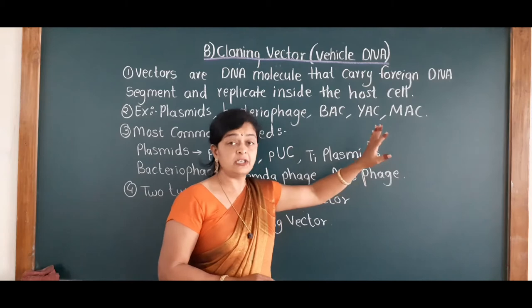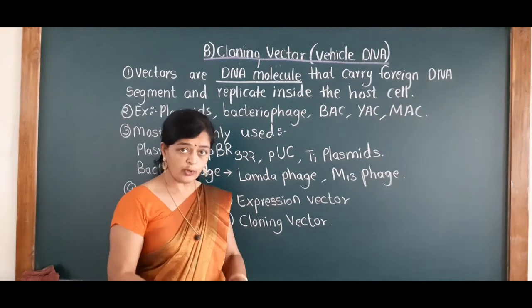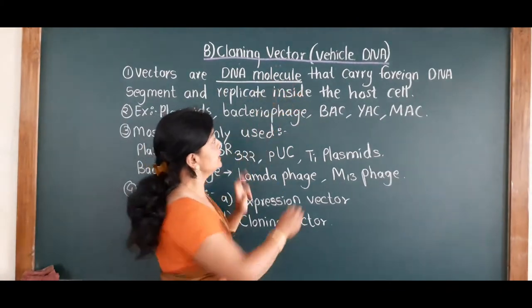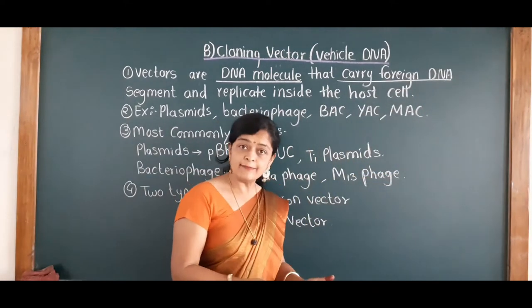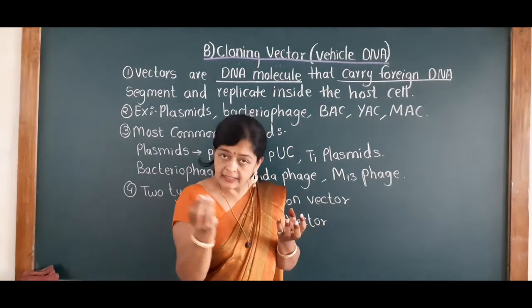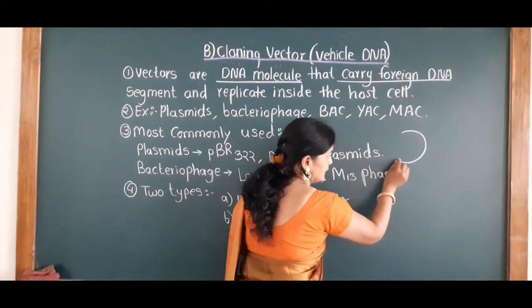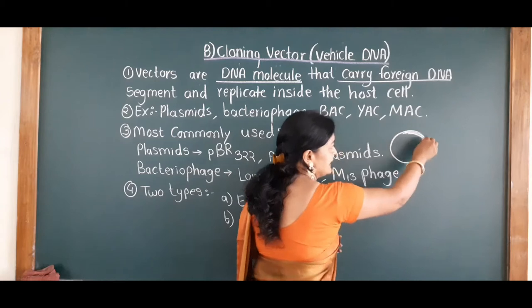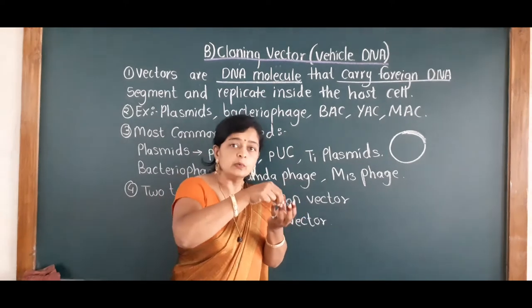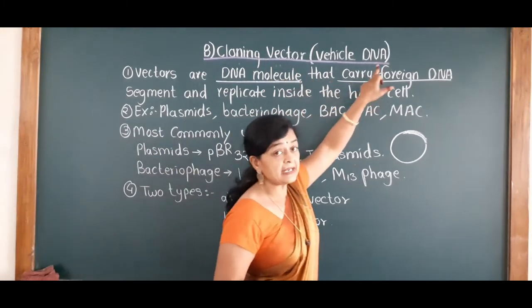So now let us see what is a vector — what is the definition of vector. Vectors are DNA molecules generally present in prokaryotic organisms. Vectors are nothing but DNA molecules that carry foreign DNA. That means if we remove DNA from another organism, we can introduce that DNA into the vector. So vectors are the DNA molecules which carry the foreign DNA when a fragment of another DNA is introduced.